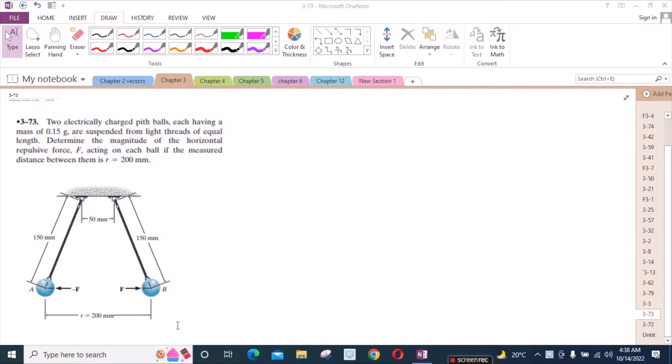According to this problem, two electrically charged pith balls, each having a mass of 0.15 grams, are suspended from light threads of equal length. Determine the magnitude of the horizontal repulsive force F acting on each ball if the measured distance between them is r equal to 200 millimeters.